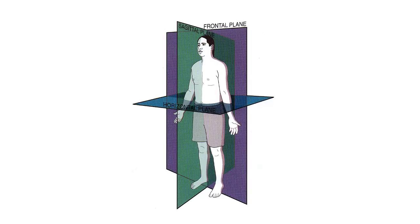Now let's take a closer look at the planes of movement and the movements that occur in them. There are three cardinal planes. The sagittal plane cuts the body into a left side and a right side; rotations in the sagittal plane are parallel to the midline of the body. The frontal plane, also called the coronal plane, cuts the body into anterior and posterior halves; rotations in the frontal plane mean the body won't move anteriorly or posteriorly. The transverse plane, also called the horizontal plane, cuts the body superiorly and inferiorly; rotations in the transverse plane will twist without raising or lowering the segment.